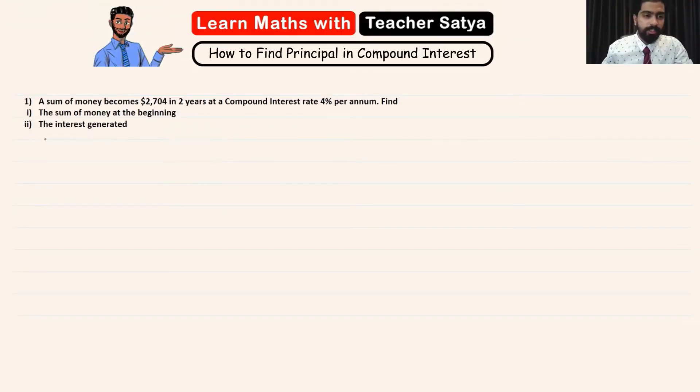In this question we see that a sum of money becomes $2704 in two years at a compound interest rate of 4% per annum. Now what we have to find is the sum of the money at the beginning, which is the principal, and then the interest generated.